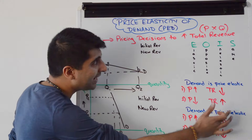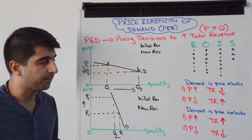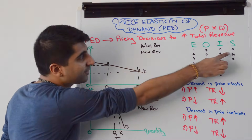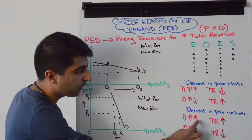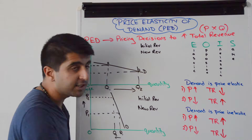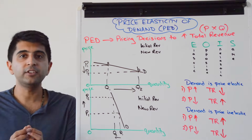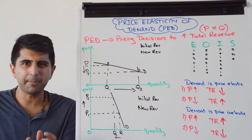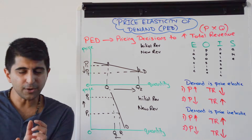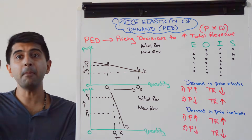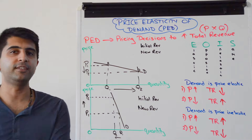Whereas if demand is price inelastic, whatever you do with price as a business, the same is going to happen with total revenue. So if you raise your price, TR is going to increase. If you increase your price, quantity demanded will fall, but only by a little bit — so you're selling a little bit less but at a much higher price, and that's going to increase TR.